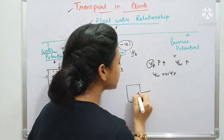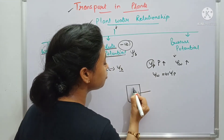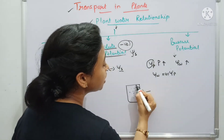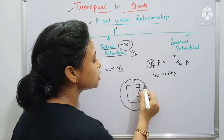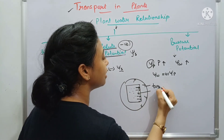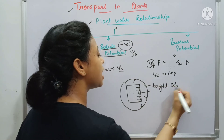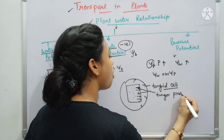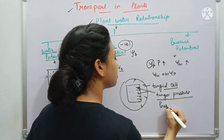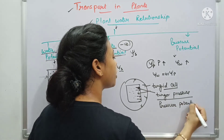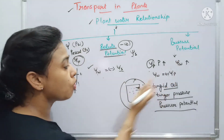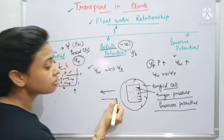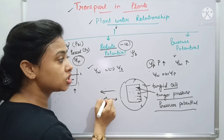When water enters a cell, the water molecules push against the cell wall, generating an opposing pressure. Because of this pressure the cell becomes enlarged in size — this is called a turgid cell. This pressure exerted by water on the cell wall is called turgor pressure, which is the same as pressure potential.